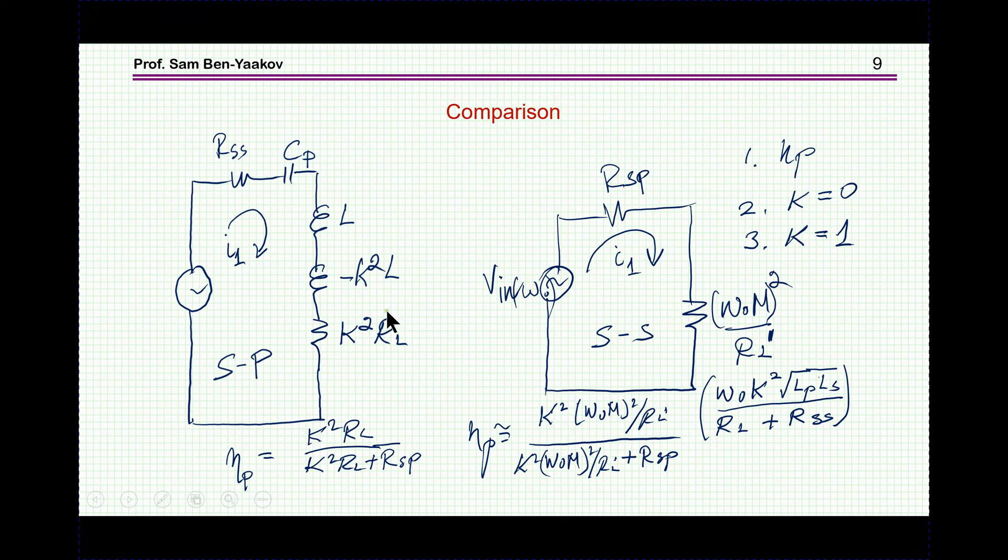Well, efficiency is this resistance divided by the total resistance. The same thing goes here, and we see here that now the efficiency really becomes large when RL is large, while here, the efficiency is becoming large when RL is small. So, this circuit is, by nature, more suitable for load resistors, which are large, while this one is more suitable for load resistors, which are small.